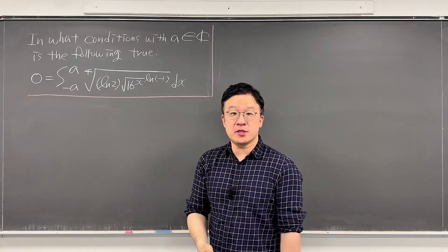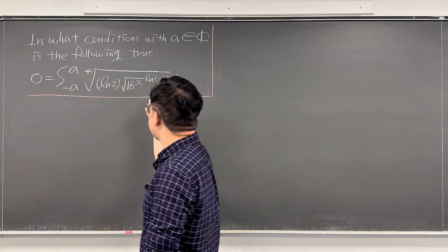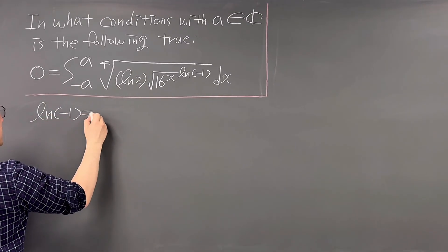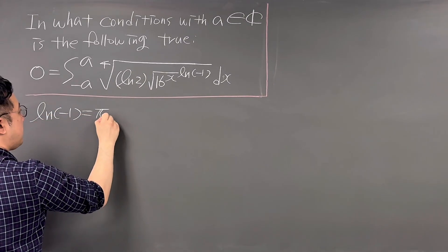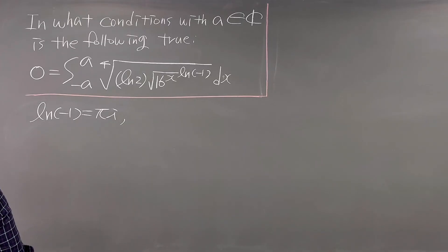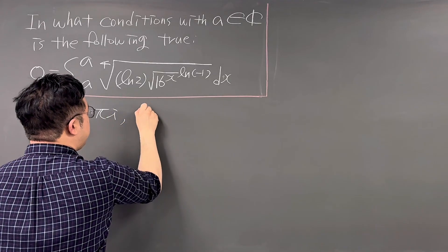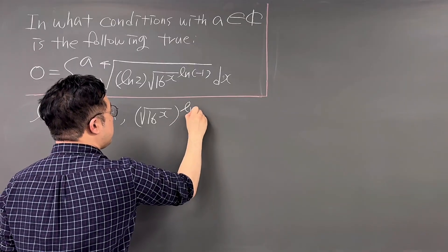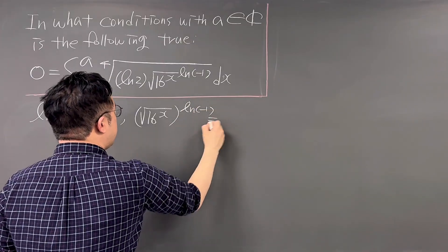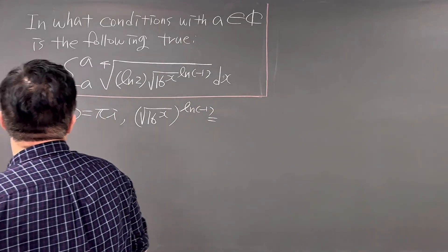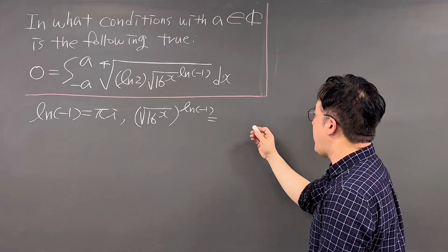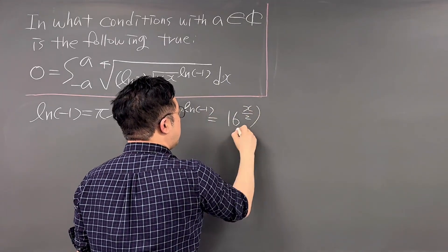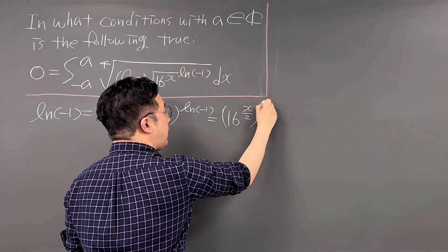We'll be using Euler's formula, but first let's notice that LN of negative 1 is equal to πi. So the square root of 16 to the power of x, to the power of LN of negative 1, we can rewrite this as 16 to the power of x over 2, that to the power of πi.